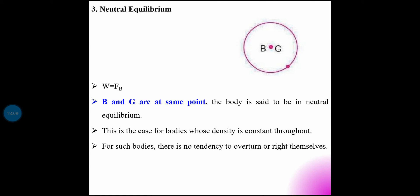Neutral equilibrium: when B and G are at the same point, the body is in neutral equilibrium. This is the case for bodies whose density is constant throughout — that is, bodies with the same density everywhere.